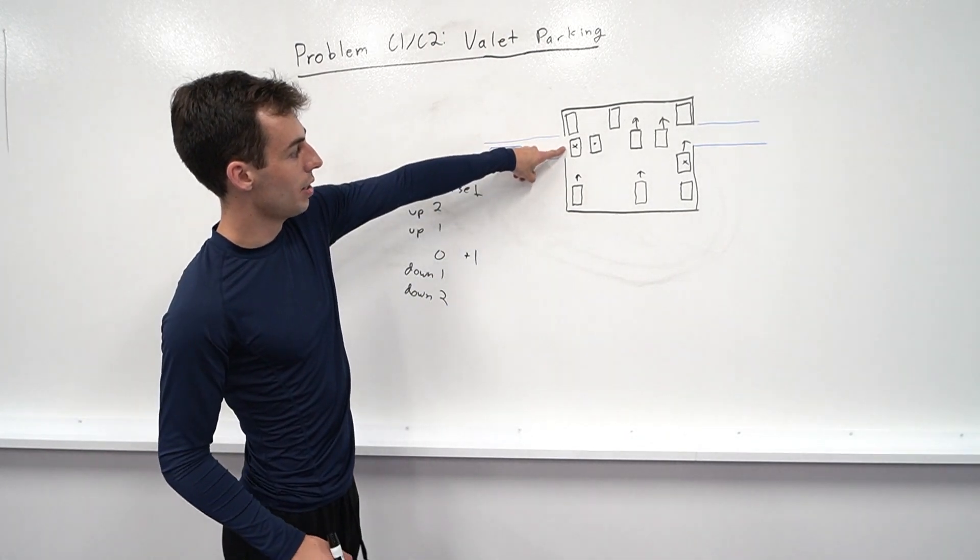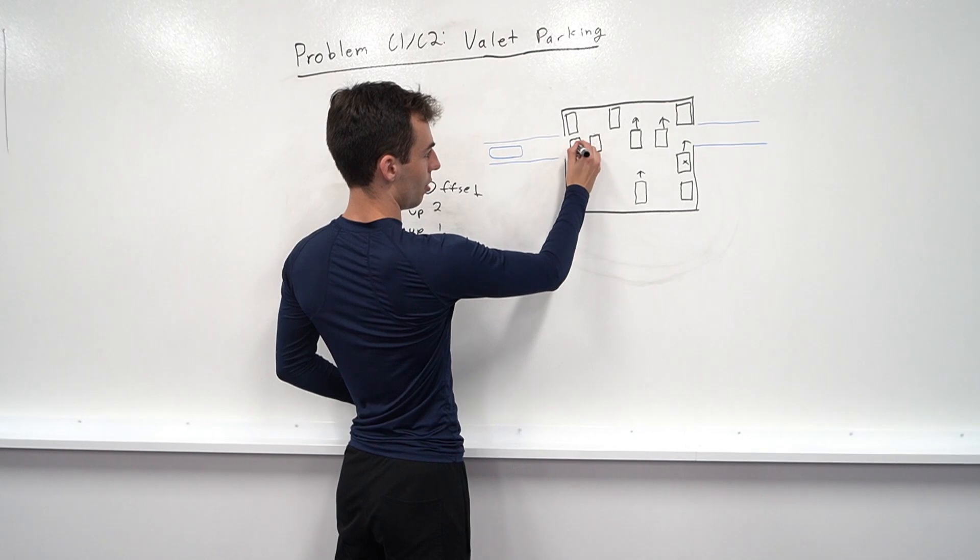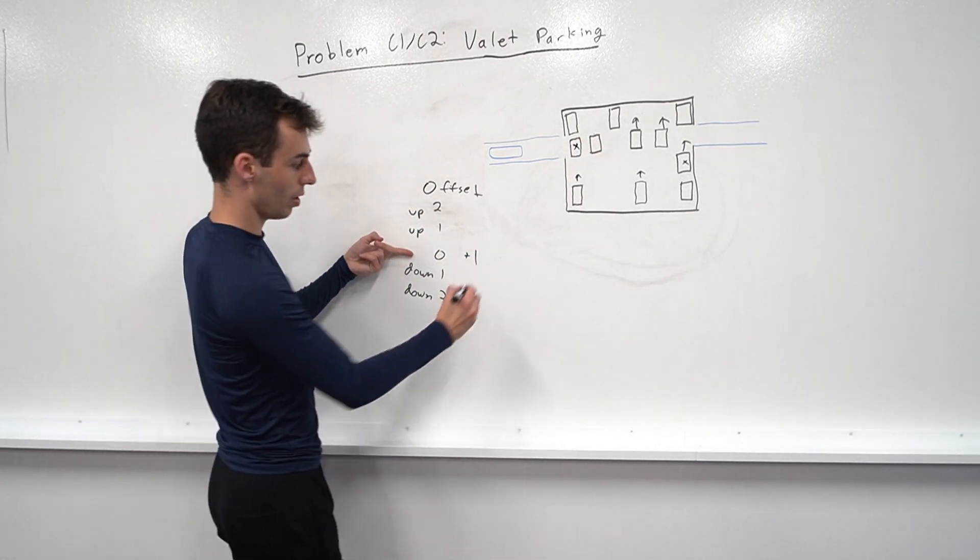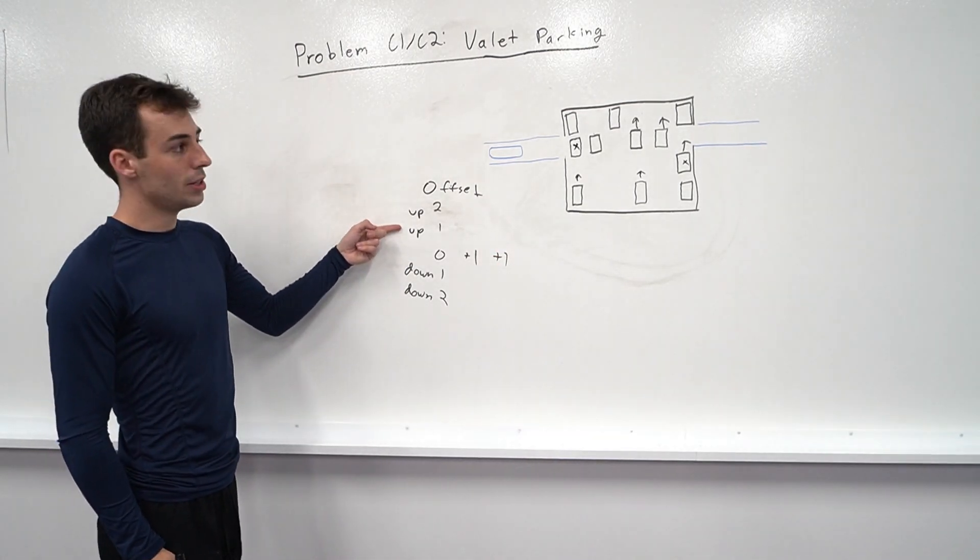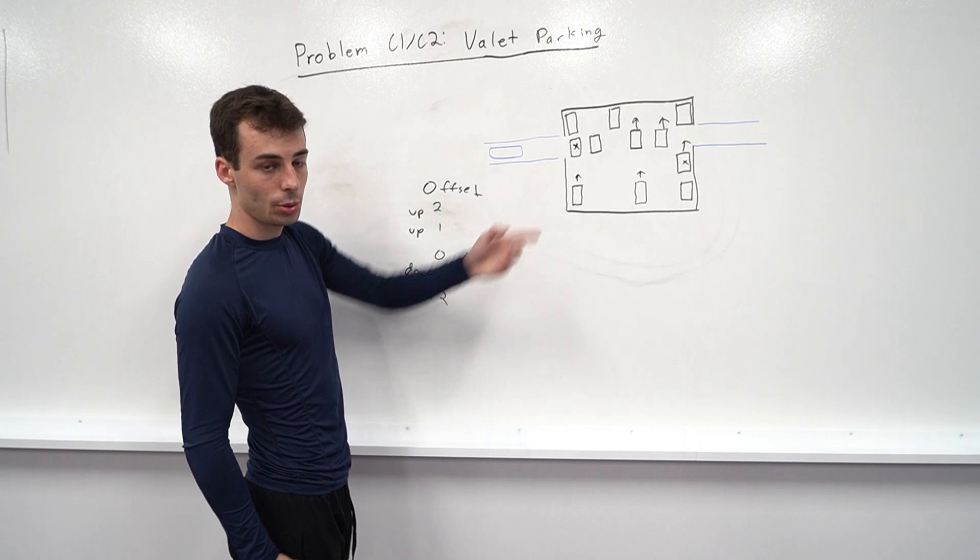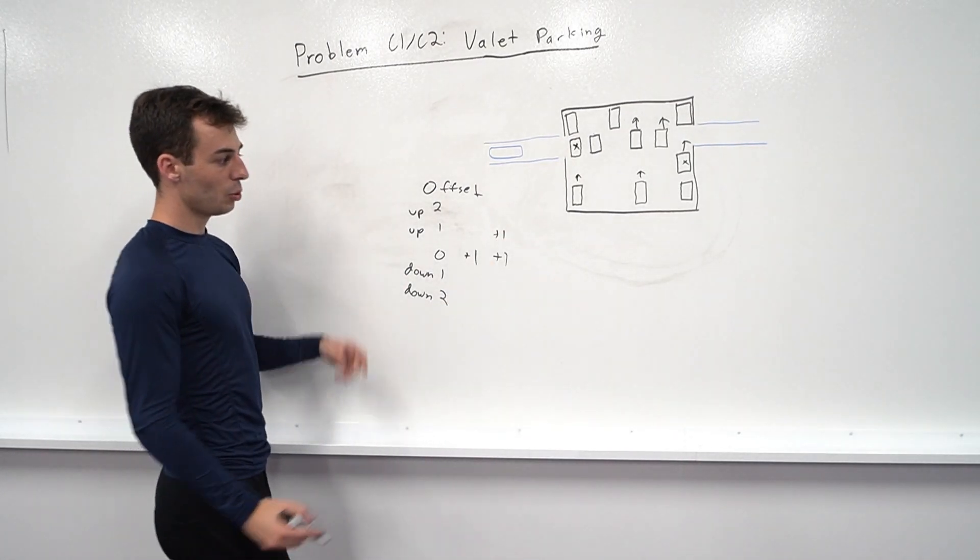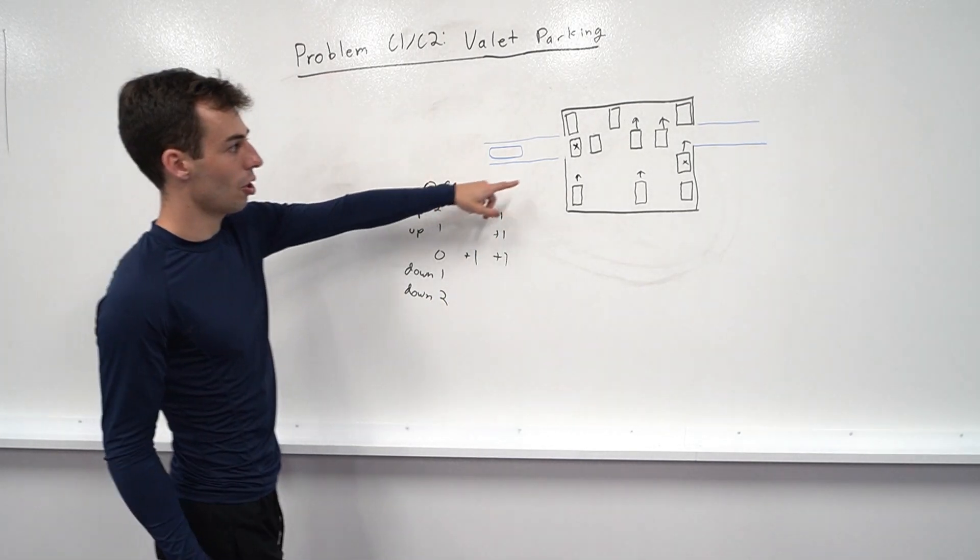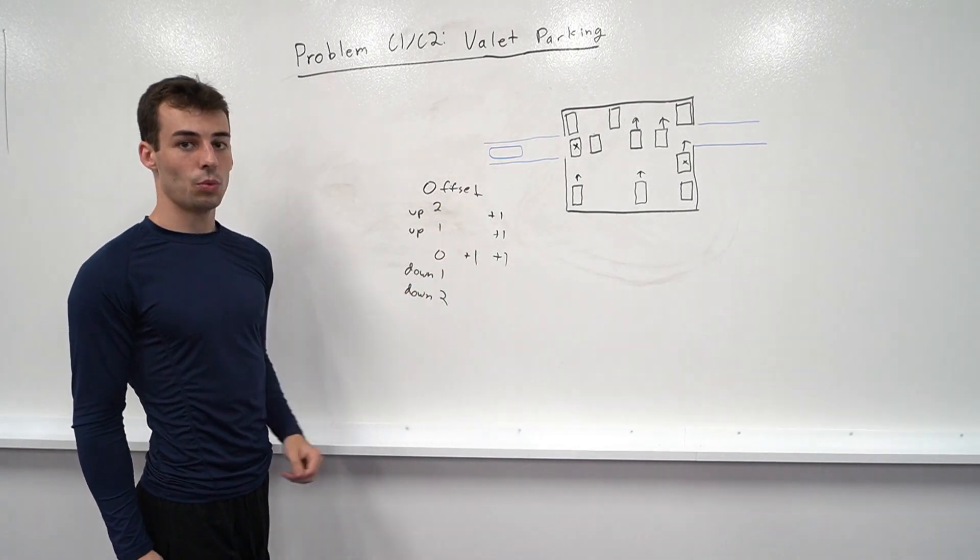What about this car right here? So let's consider this car. Well, if we don't move it, it's going to be in the way. So we have a plus one here. If we try and move up once, this car won't be able to move, so it'll be in the way there as well. So we'll have a plus one here. If we move up twice, that'll happen as well. And for any number of up times, this car will be in the way. So we'll have this entire range where we add one to for this car.